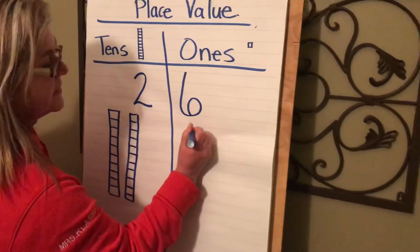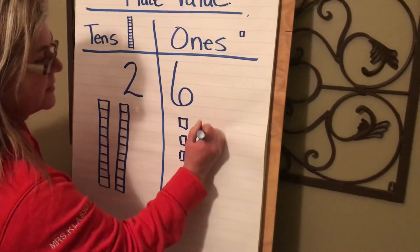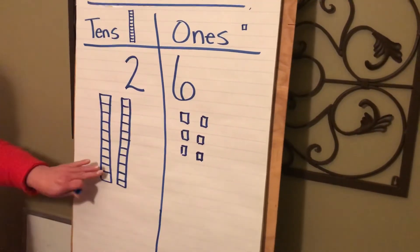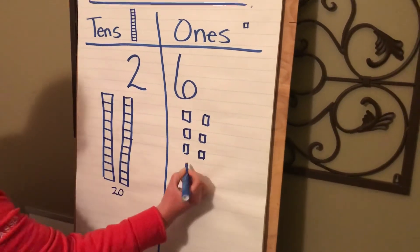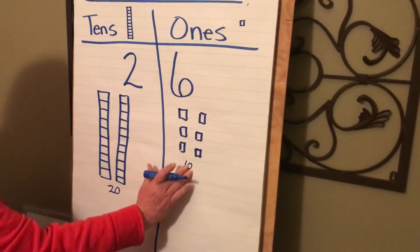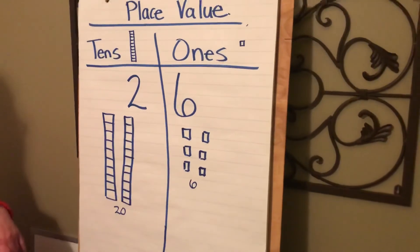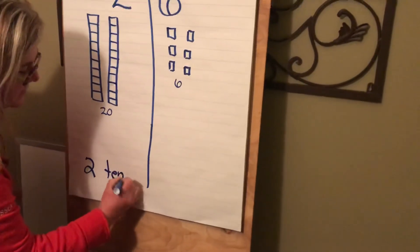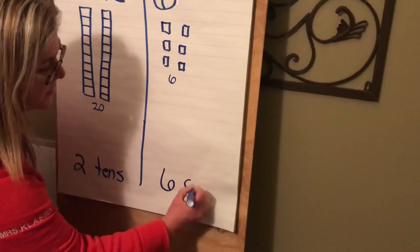And then I would have six individual blocks. So this is 20, this is 6. 20 plus 6 is 26. That's where they belong. So I have two tens and I have six ones.